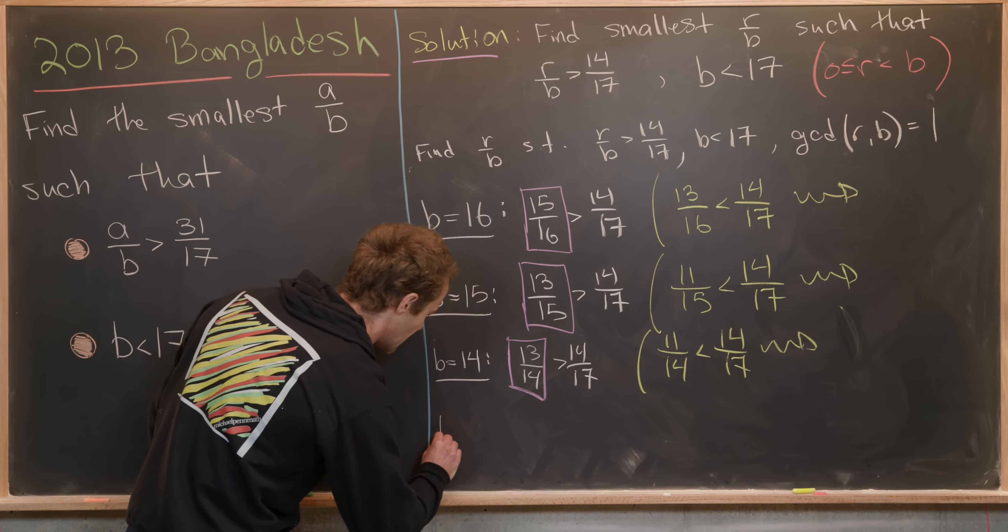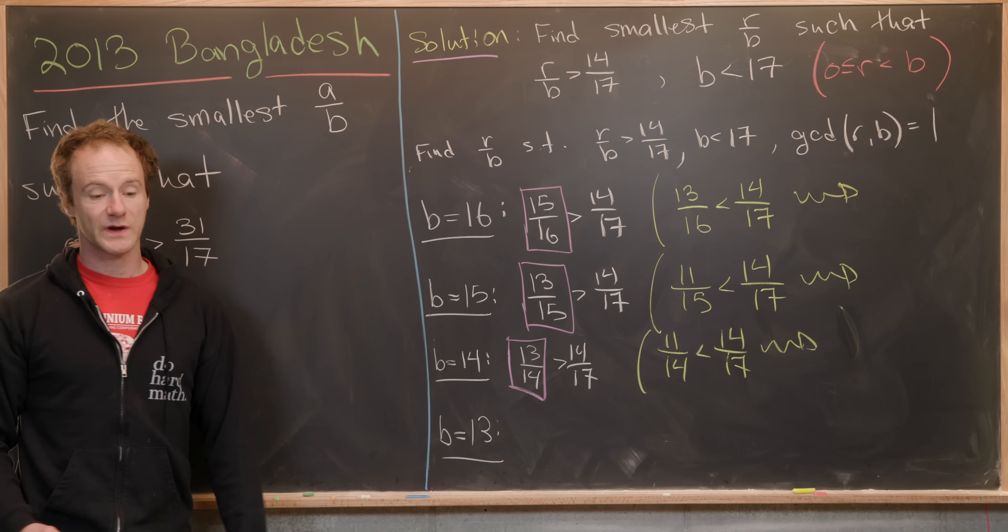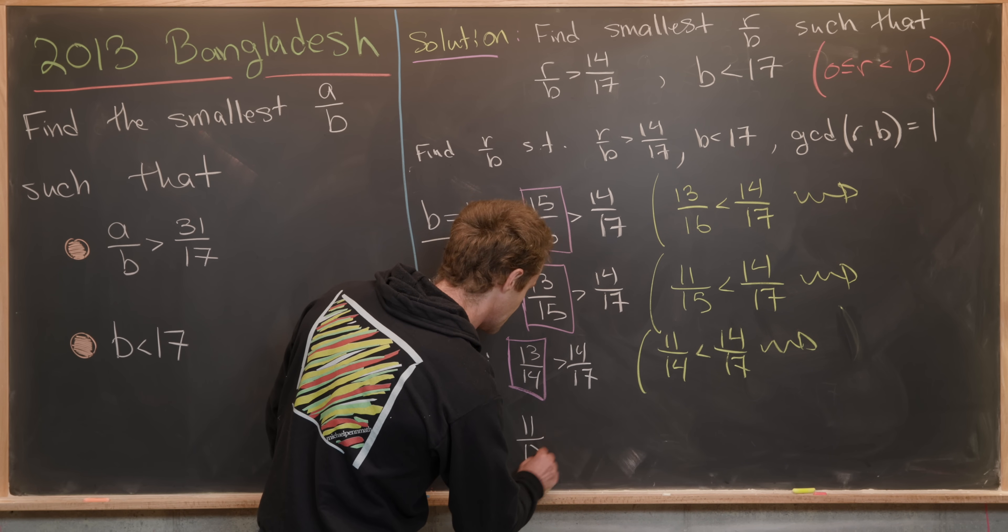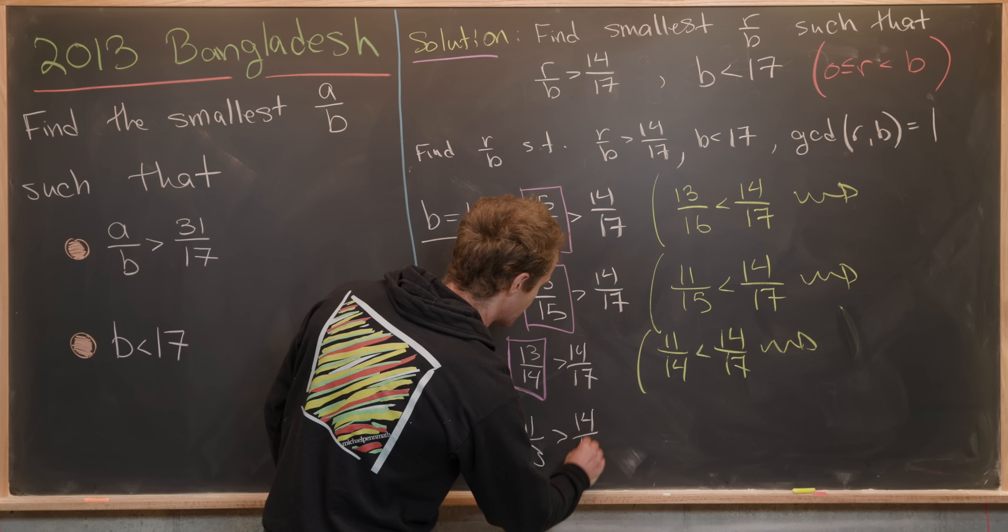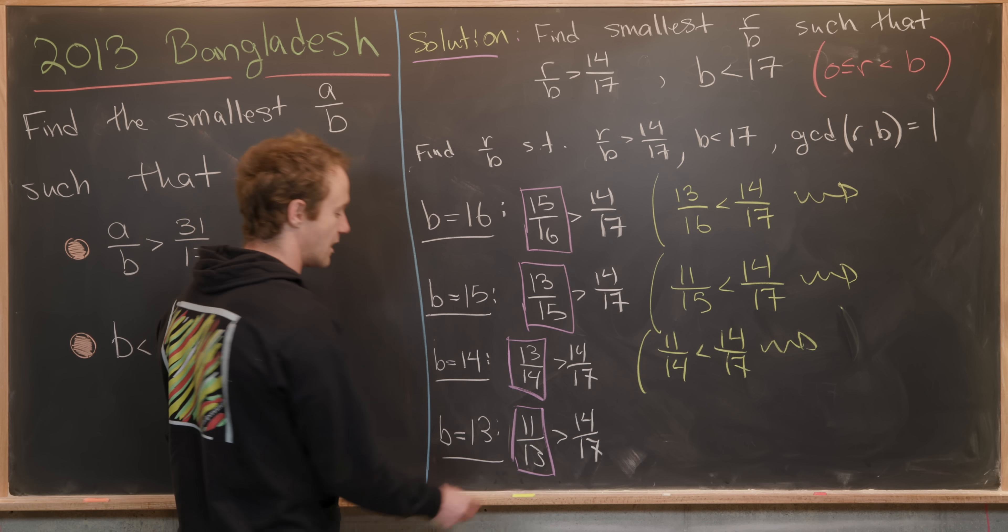Now let's move on to B equals 13. Here you can check that 11 over 13 is bigger than 14 over 17. So we'll keep this 11 over 13.